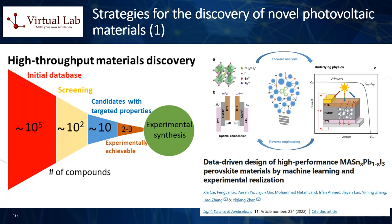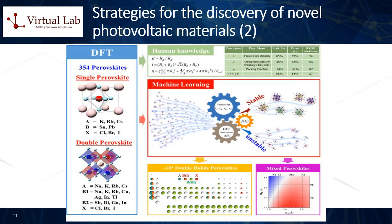Two: understanding and optimization. Once promising materials have been identified, further first principles simulations can be used to understand the behavior of these materials in more detail. For instance, researchers can simulate the behavior of a material under different conditions, such as different temperatures or levels of sunlight. This can also include the investigation of defects or impurities in the material, which can greatly impact photovoltaic performance. Three: device simulation. In addition to simulating individual materials, first principles simulations can also be used to model entire solar cell devices, including the simulation of interfaces between different materials, which is crucial for understanding how electrons move through the device and how this movement can be optimized.